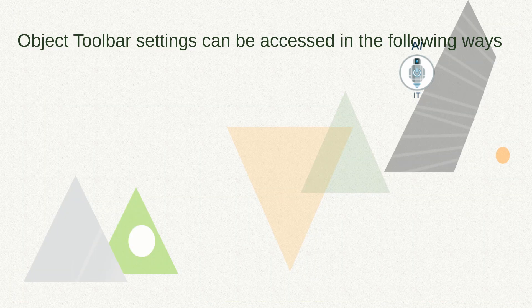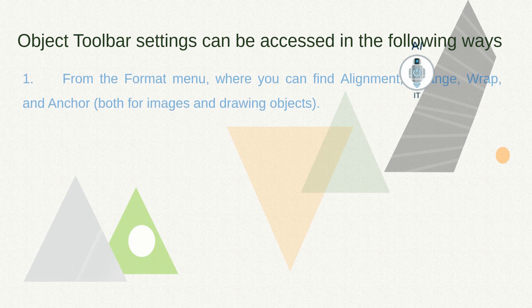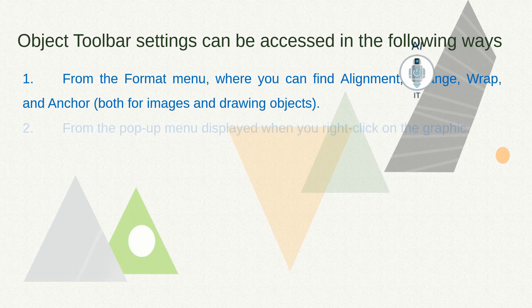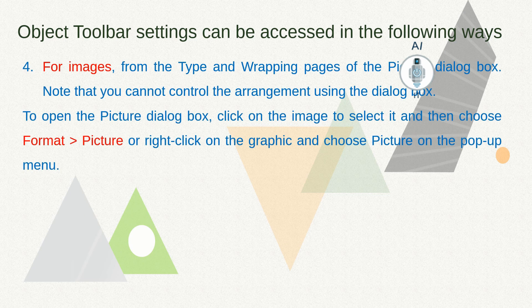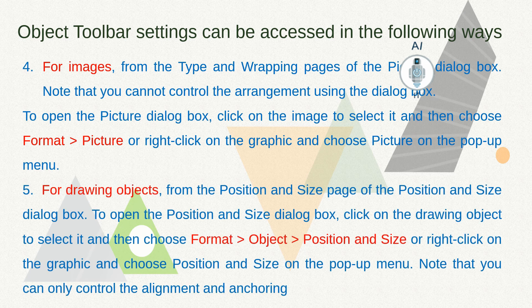We can access the settings of the object toolbar in the following ways: one is from the Format menu where you can find these four settings; the second is from the pop-up menu when you right-click on the graphic; the third is from the object toolbar itself; and the fourth, for images, you can click on Format > Picture, while for drawing objects you click on Format > Object > Position and Size. So in different ways we can access the object toolbar settings. An object may include images as well as drawing objects.